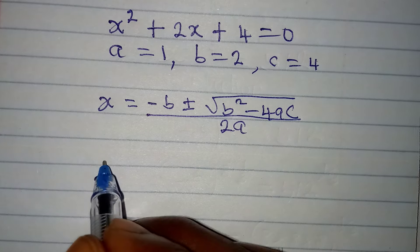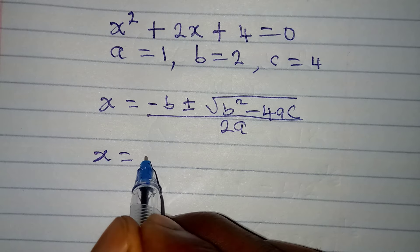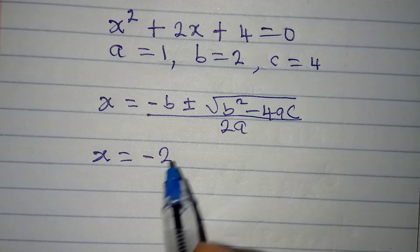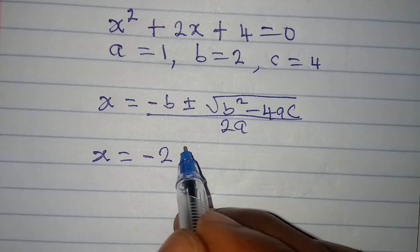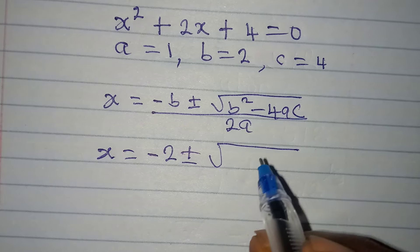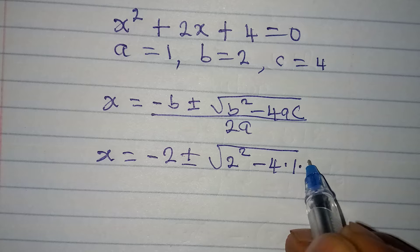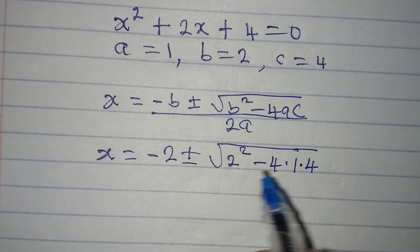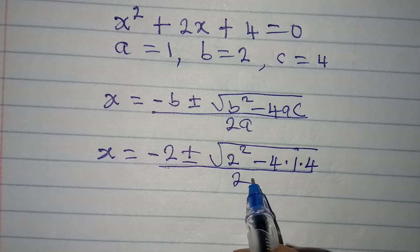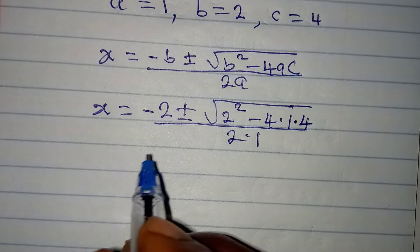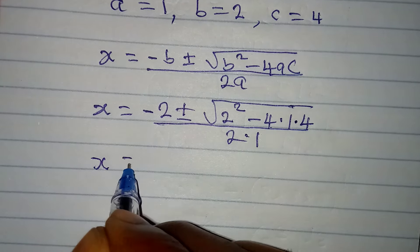Substituting: x equals minus 2, plus or minus the square root of 2 squared minus 4 times 1 times 4, all over 2 times 1. Simplifying: x equals minus 2 plus or minus the square root of 4 minus 16, all over 2. Now, 4 times 1 times 4 is 16, so inside the square root we have 4 minus 16, which gives minus 12.